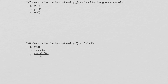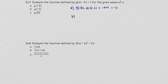Now let's look at evaluating functions — just replacing a number for x. Given g(x) = 2x + 1, find g(-2): replace all x with -2, giving 2(-2) + 1 = -4 + 1 = -3. For the next value, replacing x with -1 gives 2(-1) + 1 = -2 + 1 = -1. Evaluating is simply substituting the given value for x.